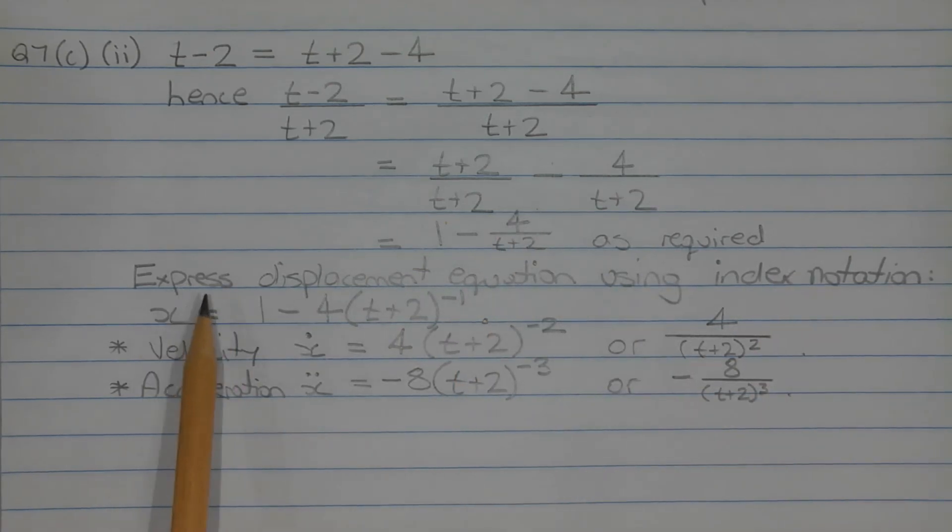Next, express the displacement equation 1 minus 4 over t plus 2 using index notation prior to differentiation. So x is equal to 1 minus 4 times t plus 2 to the power of negative 1. Now we can differentiate the displacement equation to find an equation for the velocity x dot. So the velocity x dot is equal to 4 times t plus 2 in brackets to the power of negative 2 or 4 over t plus 2 in brackets all squared.